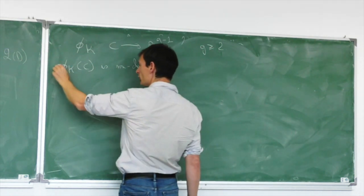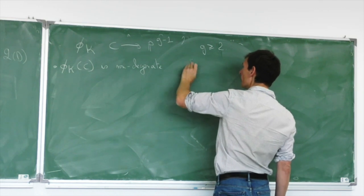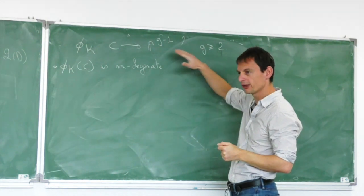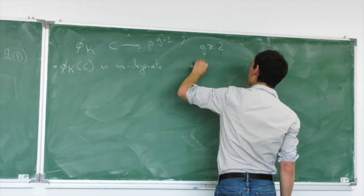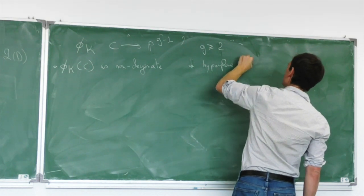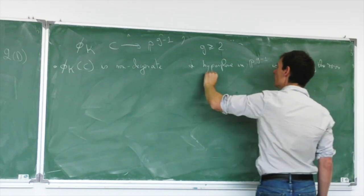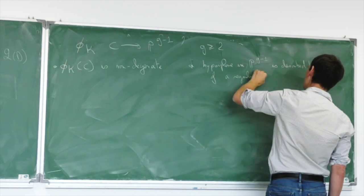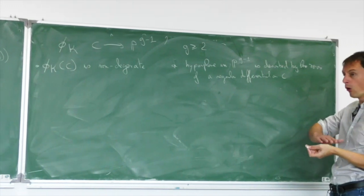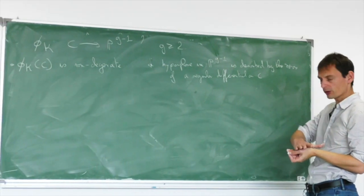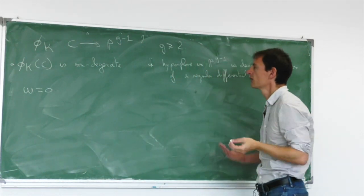Why? Simply because if it were degenerate, it would be inside a hyperplane. But a hyperplane is described by the zeroes of a regular differential on C. If this hyperplane would contain the curve, it means that all points on the curve would be zeros of my regular differential, which would imply that ω = 0 — so it wouldn't be a proper hyperplane.